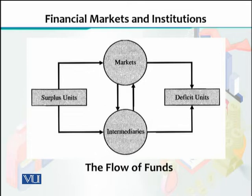Flow of funds ko understand karne ke liye - jab surplus units, wo households ya firms jiske paas apni zaroorat se zyada paisa pada hai - wo us paise ki madad se financial market mein jaake koi bonds ya shares buy kar sakte hain. Isi tarah apni extra money uthake bank mein daal sakte hain, ya financial intermediaries mein - insurance buy kar li, ya mutual funds mein paise daal diye. So surplus funds se arrowheads financial markets aur financial intermediaries ki taraf ja rahe hain.